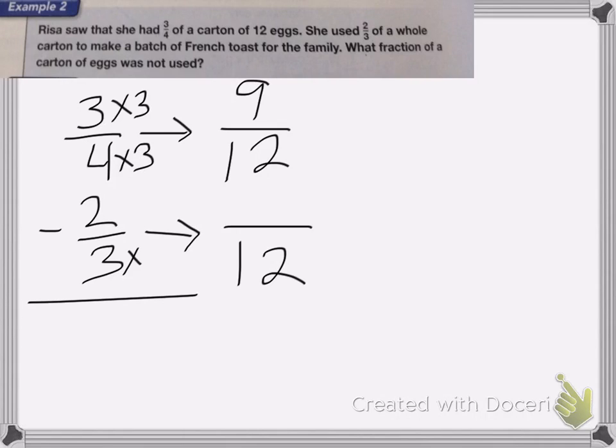So then 3 times what is 12? 3 times 4 is 12, do this to the top as well. 2 times 4 is 8. So now I can subtract them. 9 twelfths minus 8 twelfths is equal to 1 twelfth. So she did not use 1 twelfth of the eggs.